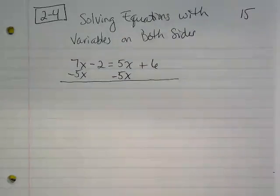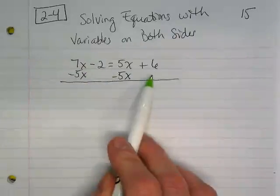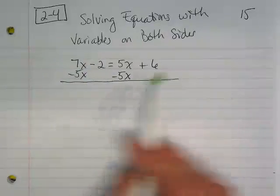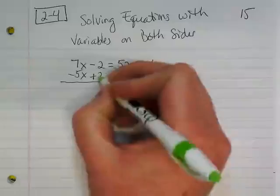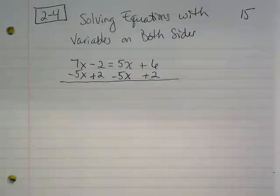When it's as simple as this where there's two terms on the left and two terms on the right, you want to focus on the variable, but you also want to focus on the number that's not with a variable. On the left side, I have a negative 2, and on the right side, I have a positive 6. If I add this 2 to both sides, and then I literally cross things out when I'm doing this so that I know where I've moved the term from.